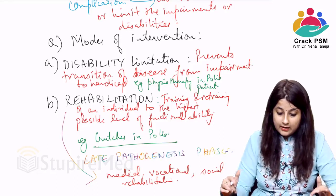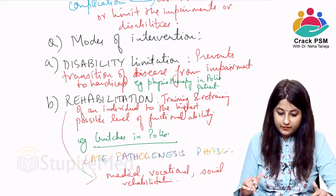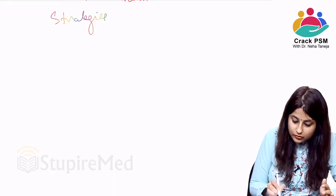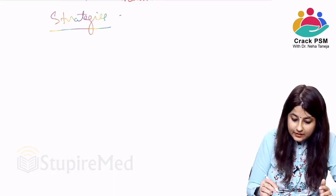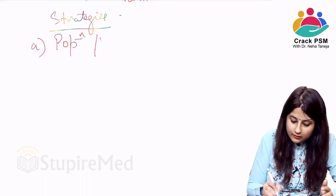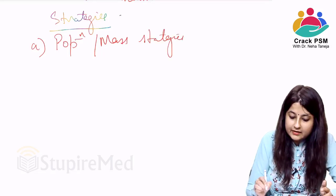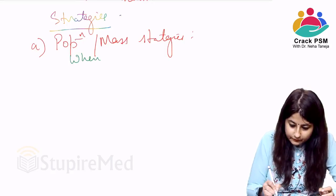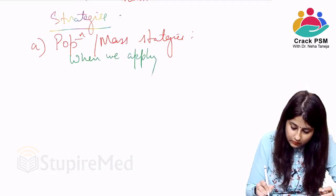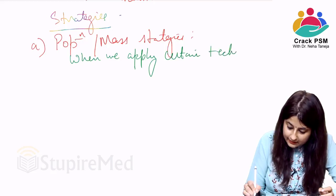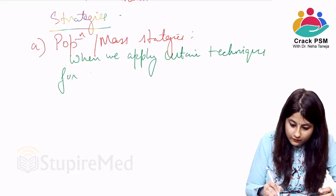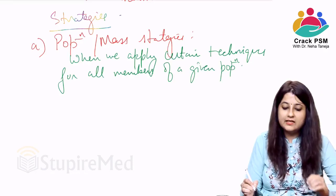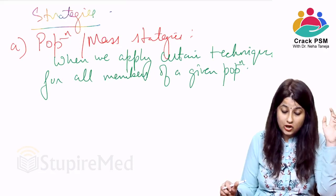There are certain strategies common to all levels of prevention. Strategies can be directed to the entire population — called population or mass strategies — or to high-risk groups. In population or mass strategies, certain techniques are applied for all members of a given population.